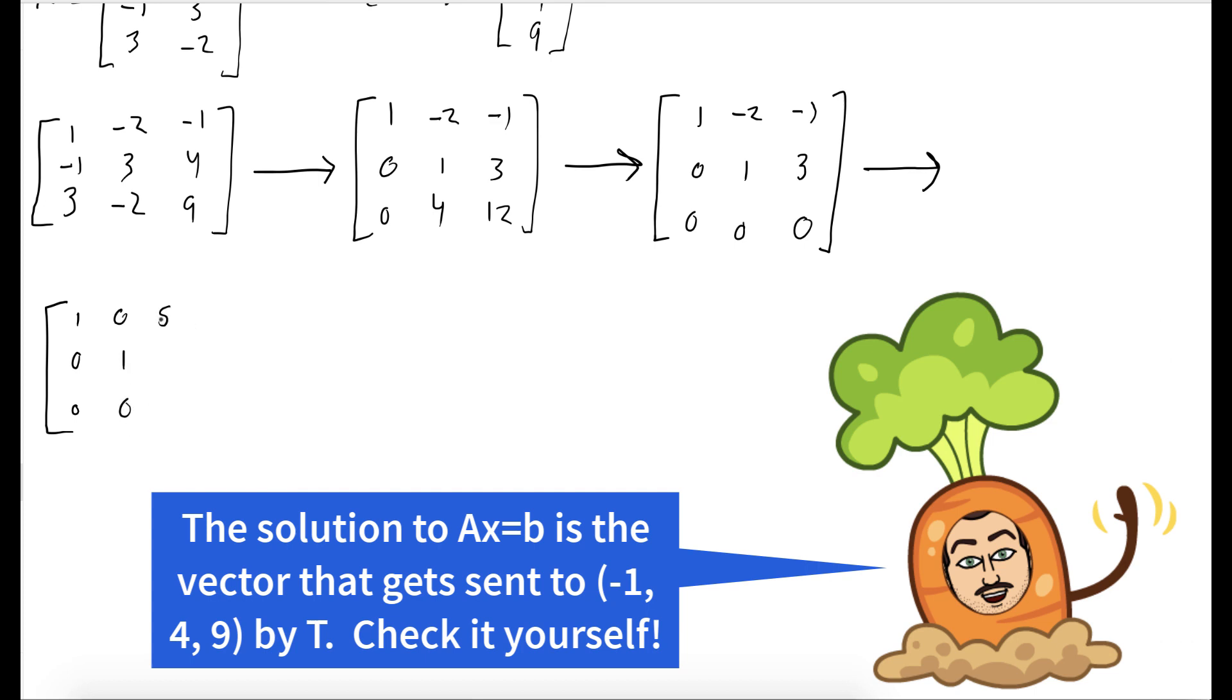Once we get to reduced row echelon form, we see that X₁ equals 5, X₂ equals 3. So the transformation evaluated at 5, 3 gives us negative 1, 4, 9.